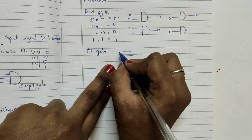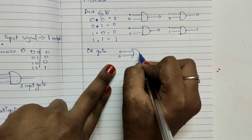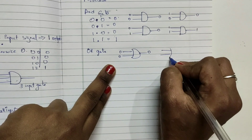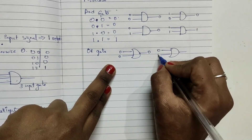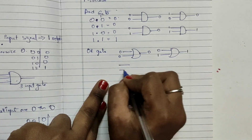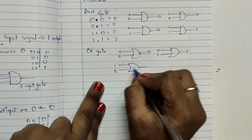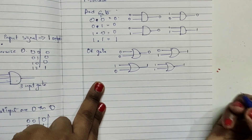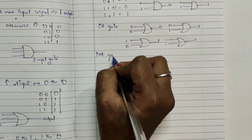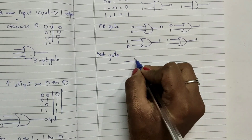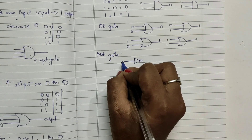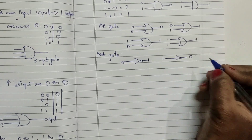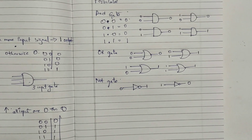For the OR gate postulates: 0 OR 0 = 0 since no condition is satisfied. 0 OR 1 = 1 since one condition is satisfied. 1 OR 0 = 1, and 1 OR 1 = 1. For the NOT gate relation: with one input and the NOT symbol, if the input is 0 the output changes to 1, and if the input is 1 it changes to 0. These are the relations of the logic gates.